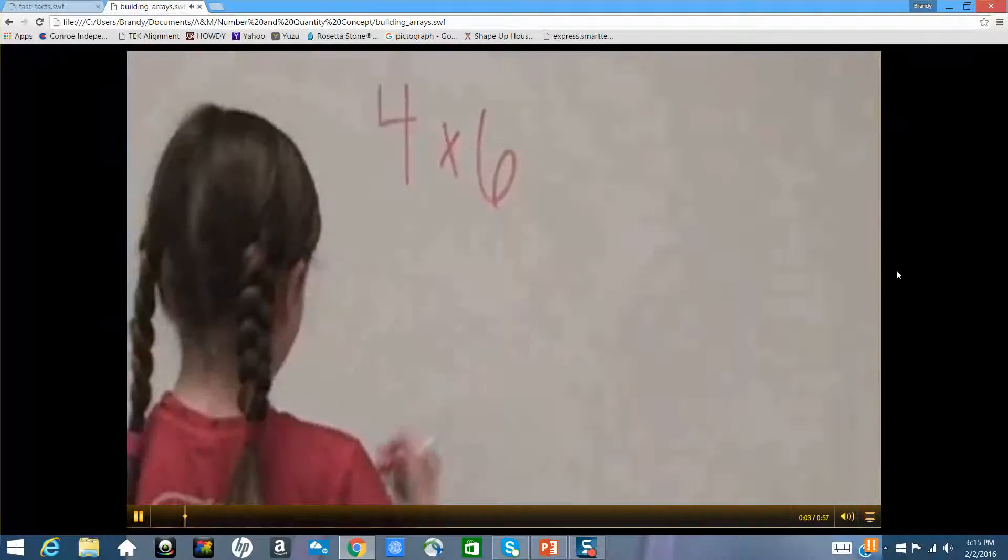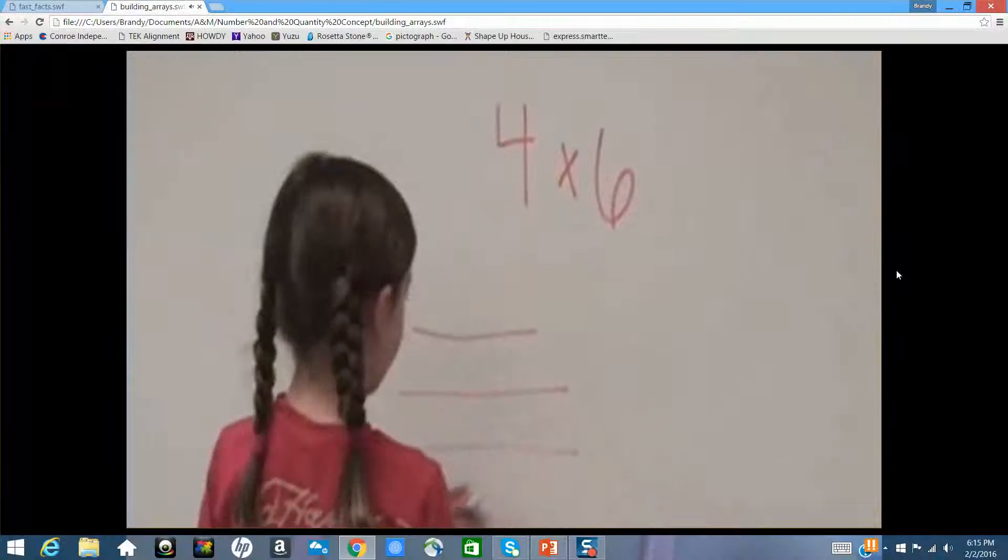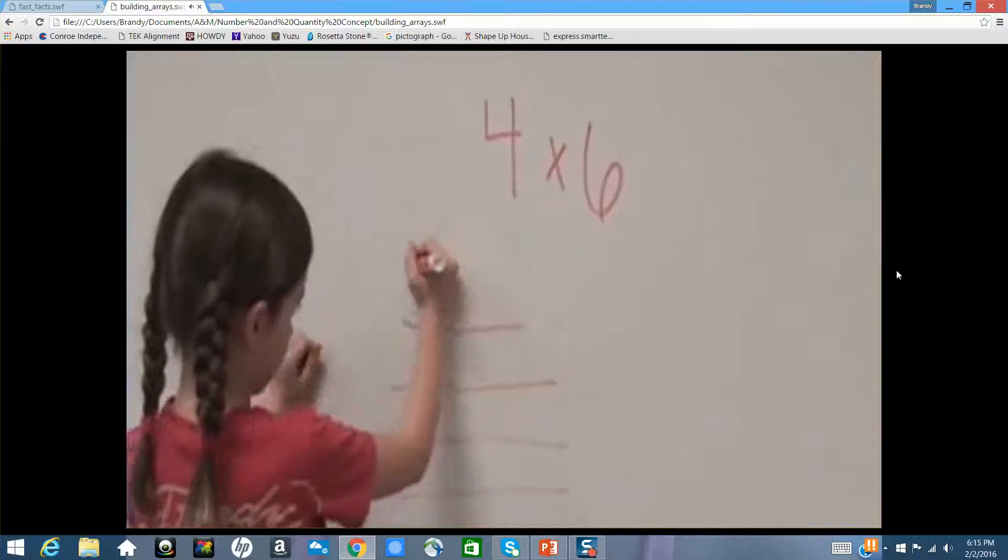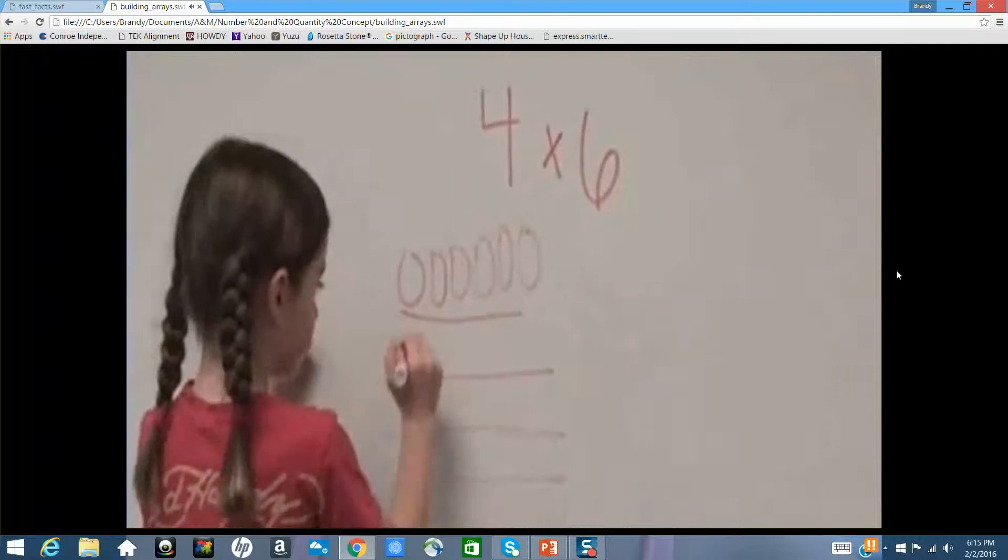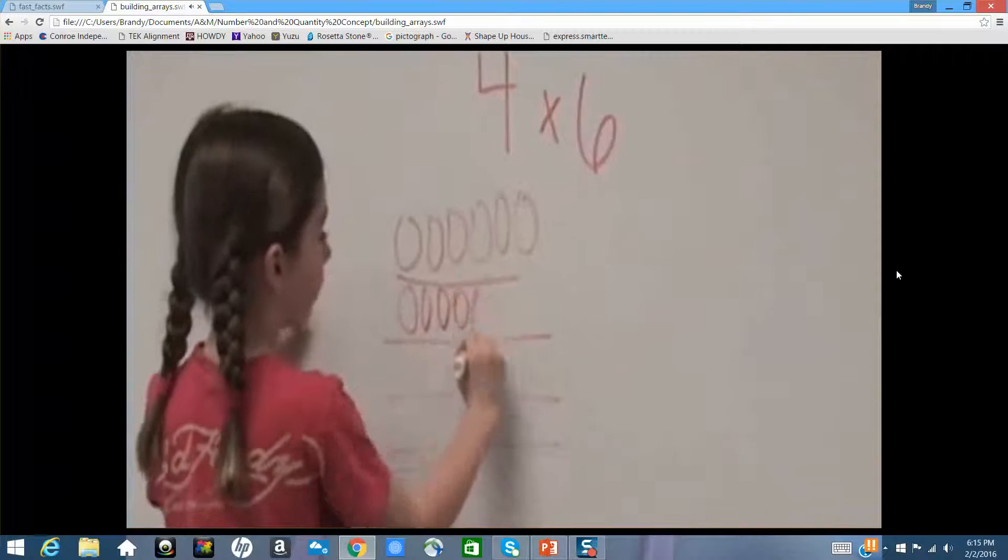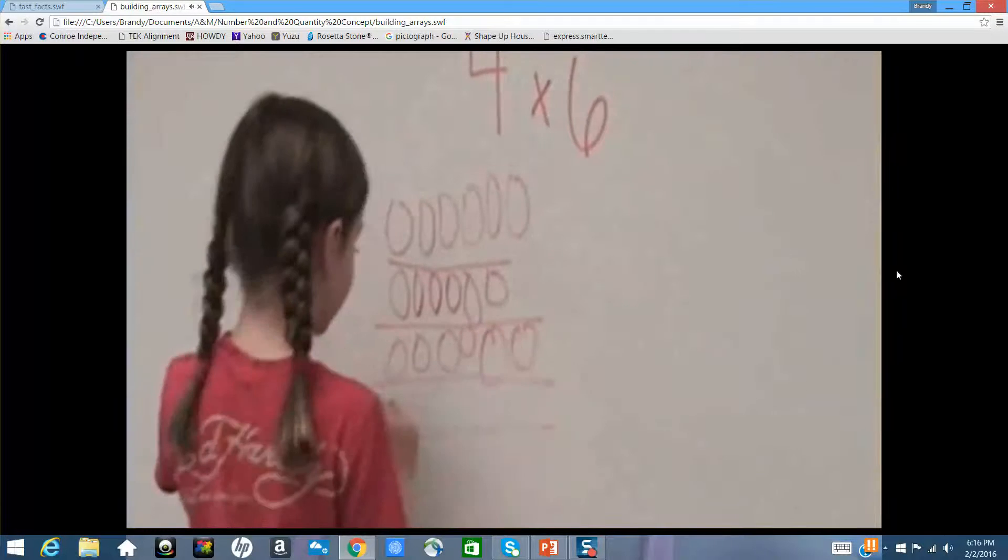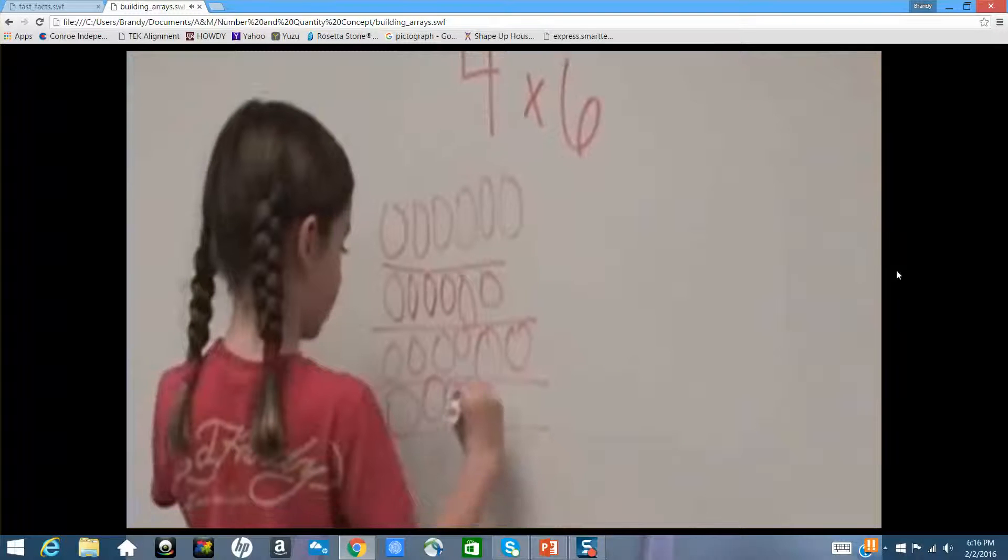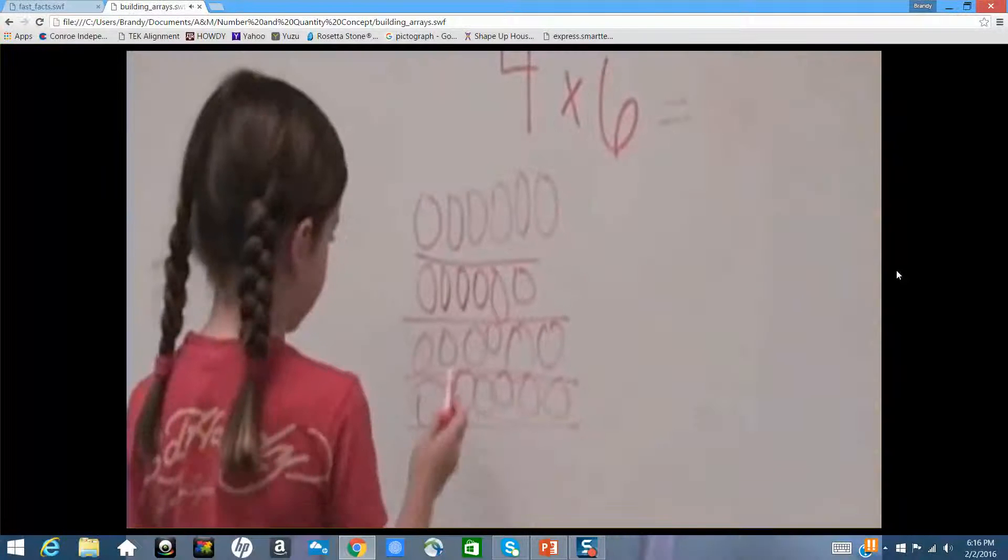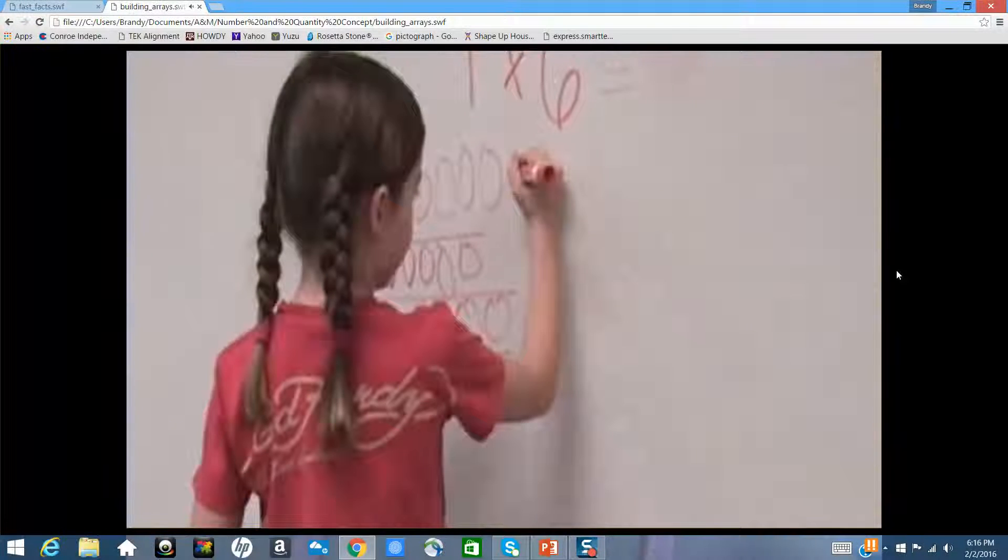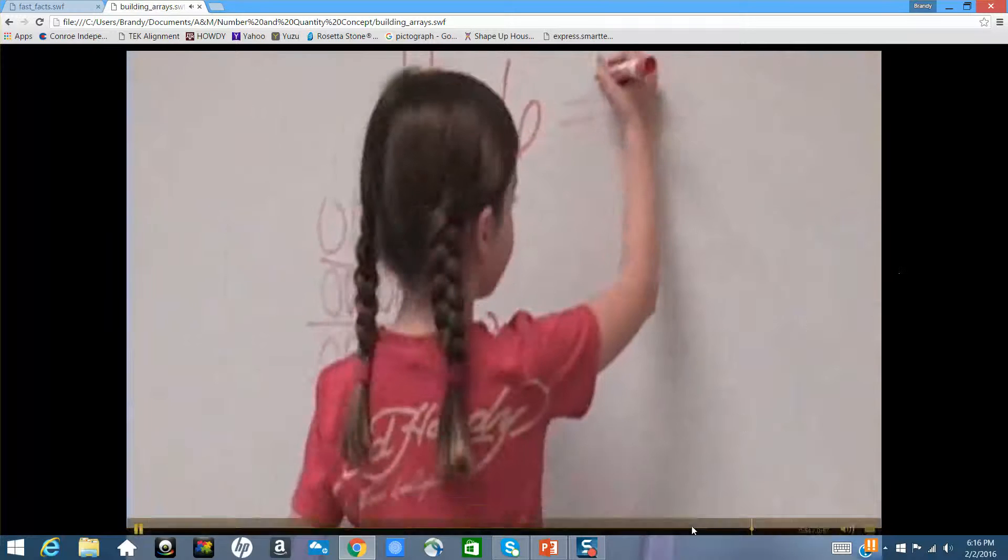Four times six. I've got to do four of those. One, two, three, four, five, six. One, two, three, four, five, six. One, two, three, four, five, six. One, two, three, four, five, six. Four times six, and I did four rows and six circles. And six plus six equals twelve. And six plus six equals twelve. And twelve plus twelve equals twenty-four.